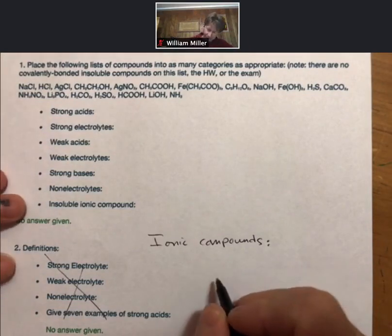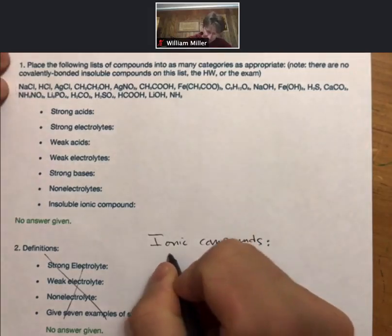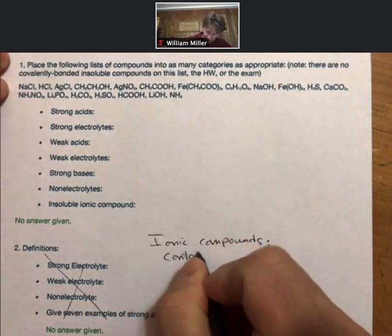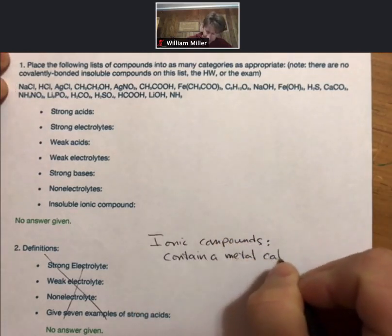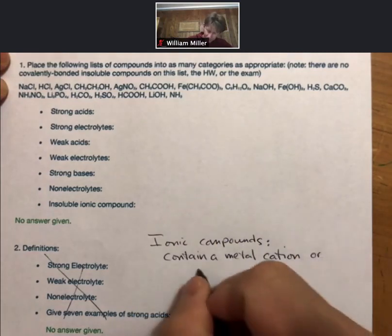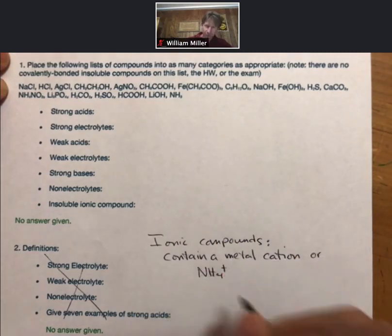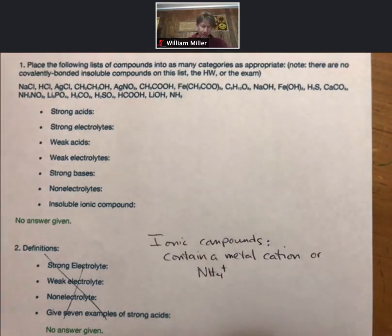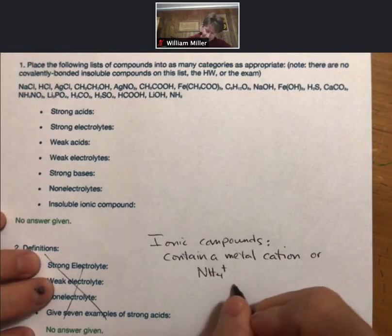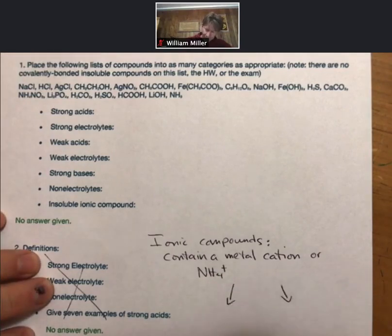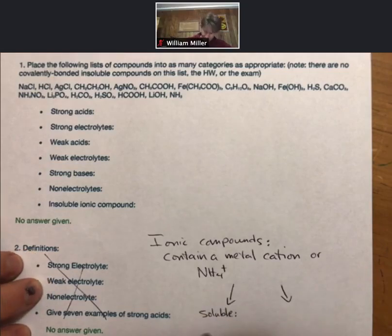Ionic compounds, the way to recognize them is they contain a metal cation, which is a positive ion, or ammonium, which is NH4+. So you can go through and say sodium chloride, that is an ionic compound. And ionic compounds only have two choices.